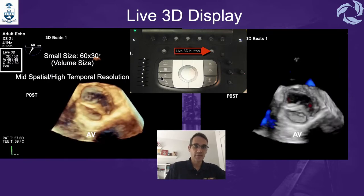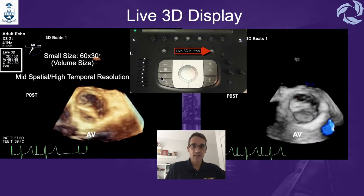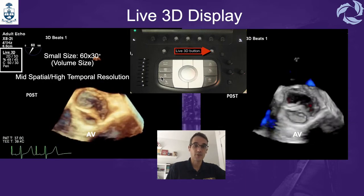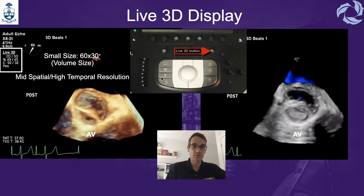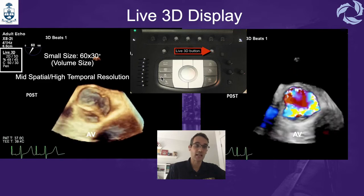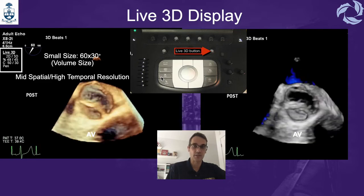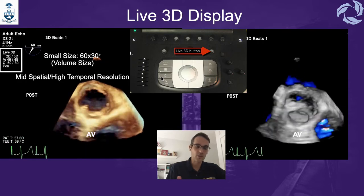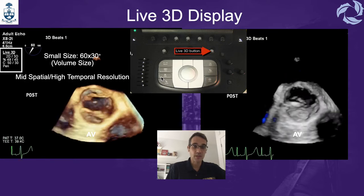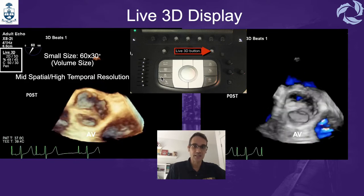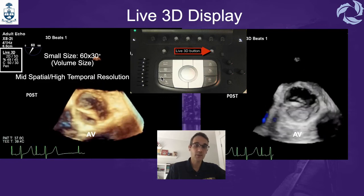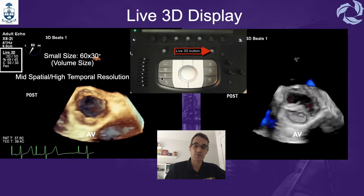The next mode is the live 3D. The live 3D acquisition produces a small size 3D volume, allowing for mid spatial resolution and high temporal resolution, although it might be insufficient to contain an entire structure of interest — for example, a left ventricle or right ventricle because they are too big. This modality is often used only for 3D image tests and to guide the placement of wires. The live 3D mode generates a 60 degrees of lateral width and a 30 degrees of elevational width, with a height equivalent to 90% of the 2D plane.